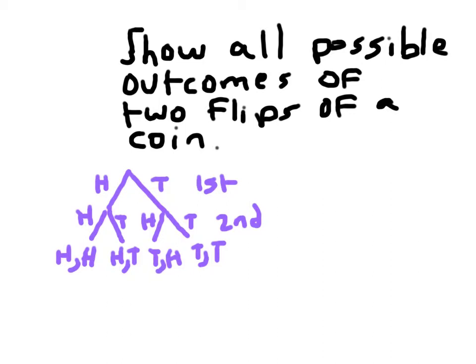Now this is the probability tree. The other way that I could represent all these outcomes is what we call a grid, which is what our lesson is today. So let me go ahead and draw a grid.